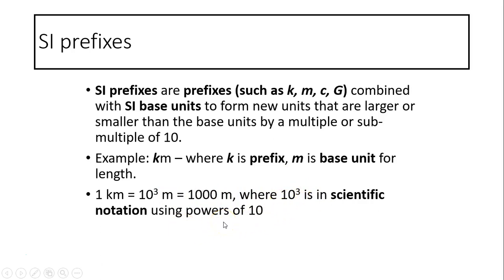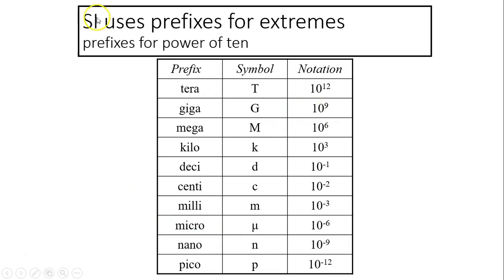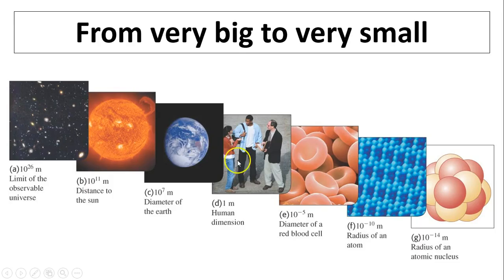We use scientific notation to express quantities that are very, very big or very, very small. Here is SI prefix expressed in scientific notation. Terra is used to express something really big - terra is 10 to the 12th, giga and so forth, down to very small. Pico is 10 to the negative 12th. To express something very, very big to something very, very small, we use scientific notation.